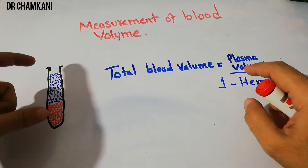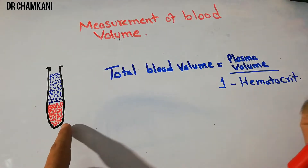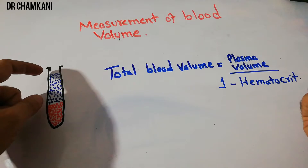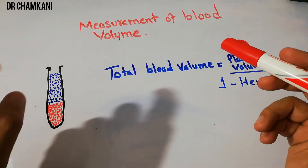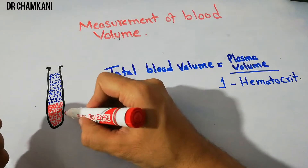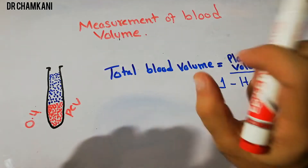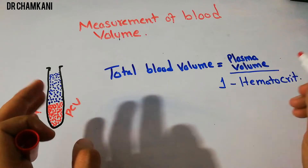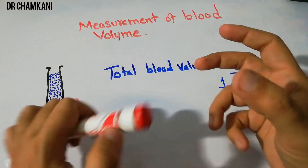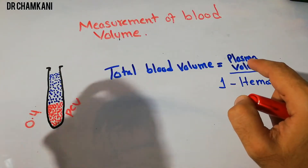For the hematocrit, we take a sample of blood in a test tube and centrifuge it. The red blood cells will settle down and the plasma will be separated. The amount of space occupied by the red blood cells is basically the PCV — the packed cell volume — which is normally around 0.4. If we put the value 0.4 and the value of plasma volume into the equation, we can easily calculate the total blood volume. A small sample is sufficient to give us the value of hematocrit.